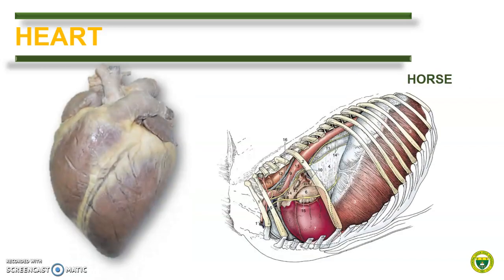The heart of a horse is like a laterally compressed cone. It lies in the ventral part of the middle mediastinum, directly cranial to the diaphragm. Most commonly, the heart extends between the planes of the second to the sixth intercostal spaces, which places the apex directly caudal to the level of the point of the elbow. There is significant variation in the sizes of the heart of horses, as those trained for exercise have bigger hearts compared to non-exercising horses.